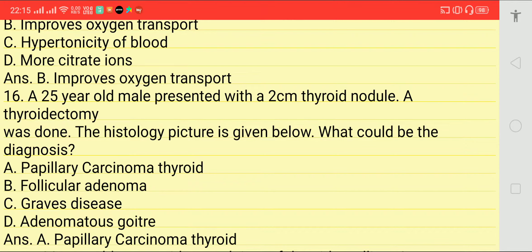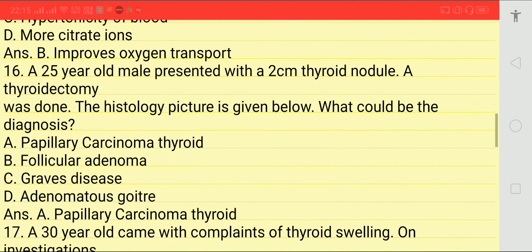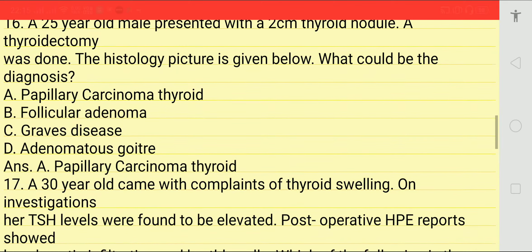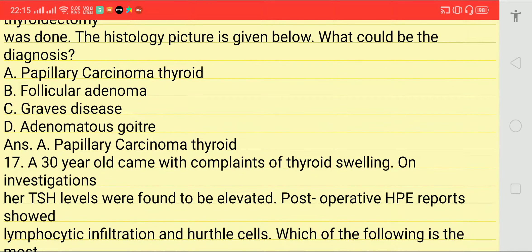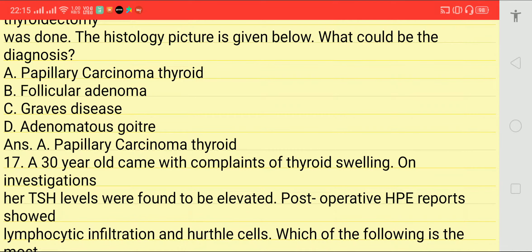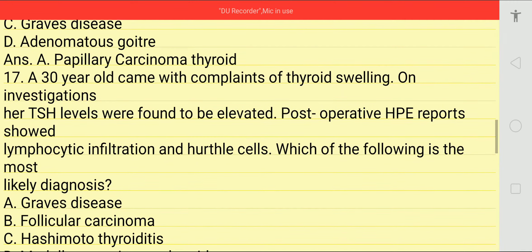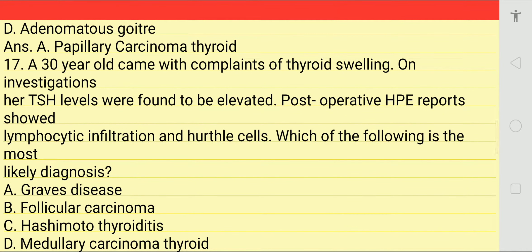Next question: a 25-year-old male presented with a 2 cm thyroid nodule. Thyroidectomy was done and a picture was given. What would be the diagnosis? Options: papillary carcinoma of thyroid, follicular adenoma, Graves' disease, or adenomatous goiter. Answer is papillary carcinoma of thyroid.